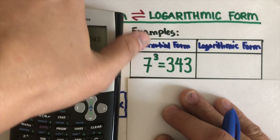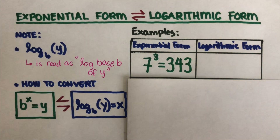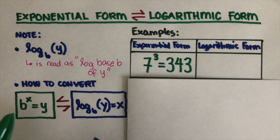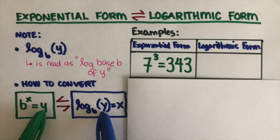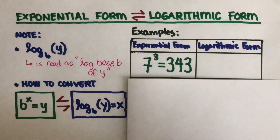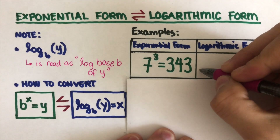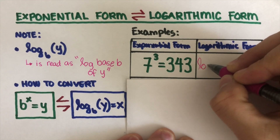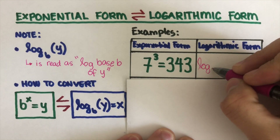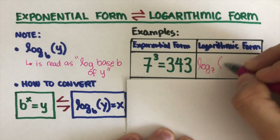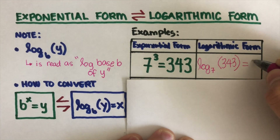Now, let's change this to its logarithmic form. Just a reminder how we set it up: the b is going to go here, the x is going to go here, and the y is going to go inside the parentheses. In this example, I can write this as log base 7 of 343 is equal to 3.